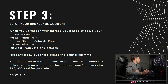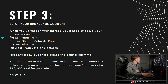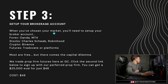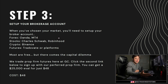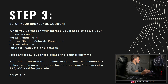Moving into step three, we want to actually set up a brokerage account. Because we trade futures at GC Trading Systems, I'm going to give you guys the best broker for futures, but I've also listed some ideal brokers for different markets on screen. If you're into Forex, use Oanda or MT4. For stocks, Charles Schwab, Robinhood, or Webull are generally okay. For crypto, Binance and Coinbase are the only ones I really trust. As far as futures goes, you can either go with TradeOvate, NinjaTrader, or PropFirms. Most of these brokers are free, but there comes the whole capital dilemma.